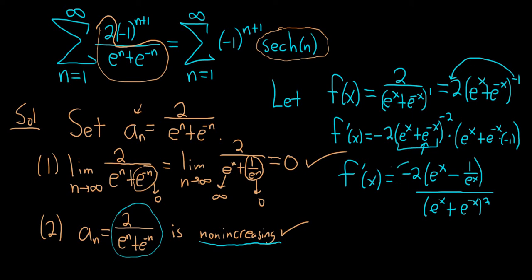And this will be negative. This negative 2 here is negative. This quantity here is always going to be positive. e to the x minus 1 over e to the x should always be positive. The bottom quantity is also positive. This whole thing is going to be negative. So f is decreasing, so in other words, it's not increasing.